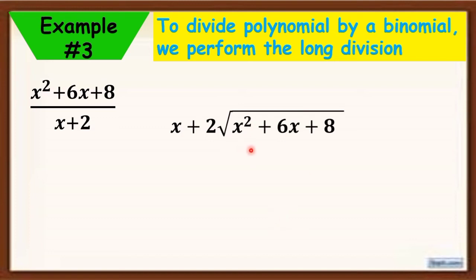x squared divided by x equals x. Then, x times x plus 2 equals x squared plus 2x, because x times x is x squared and x times 2 is 2x. That's why we have x squared plus 2x here. Now, subtract.